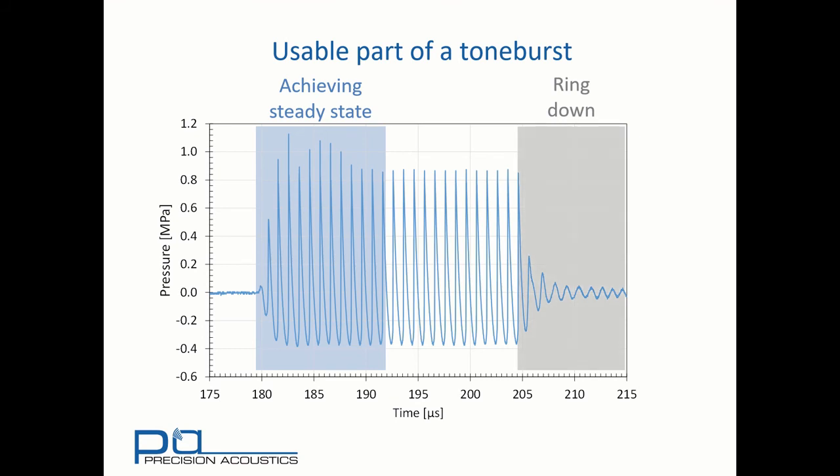Similarly, at the back of the pulse, we can see there's a lot of transducer ring down. So it's only the middle 13 to 24 cycles of this signal, which are suitable in which to make measurements.